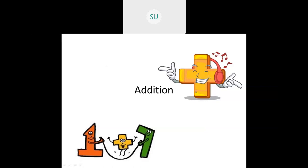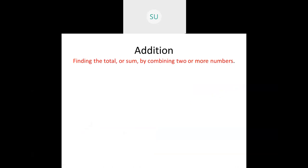First we saw what is addition — what is the meaning of addition? Addition means combining two or more numbers together to find the sum or total. For example, if I have two balloons and you all have six balloons, to find out how many balloons we all have together, we'll add them. Two plus six gives us eight balloons. So this is what addition is: combining two or more numbers together to find a sum.